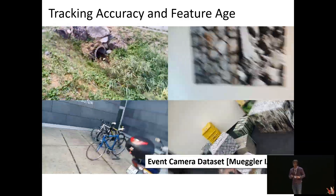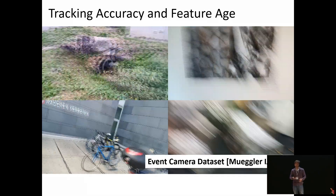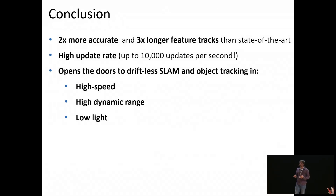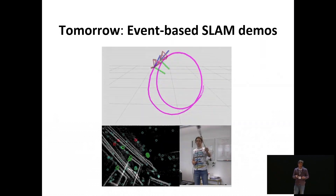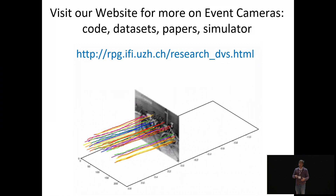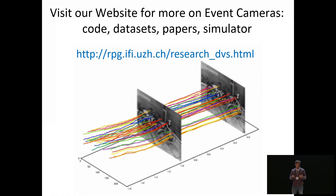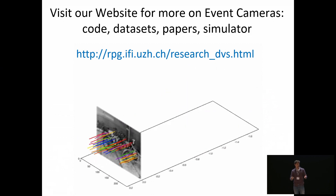We extensively evaluated our method on several natural datasets and compared it against several state-of-the-art methods — details are in the paper. In conclusion, we present a feature tracker which is two times more accurate and has three times longer feature tracks than the state-of-the-art, with a very high update rate of up to 10,000 updates per second. This opens the doors to driftless SLAM and object tracking in high-speed, high dynamic range, and low-light conditions. We invite you to our demo booth tomorrow, and you can find code, datasets, papers, and a simulator on our event-based camera website. Thank you for your attention.